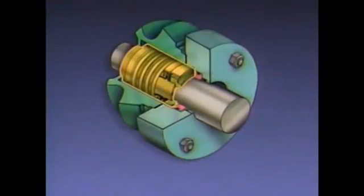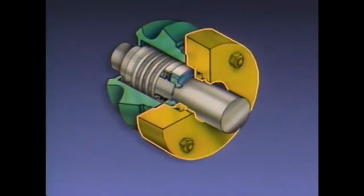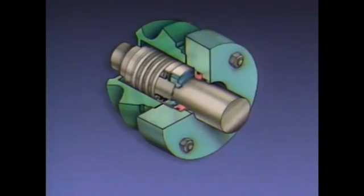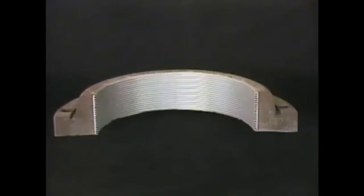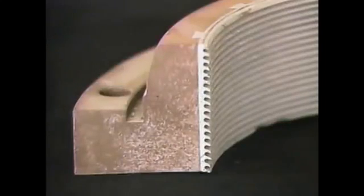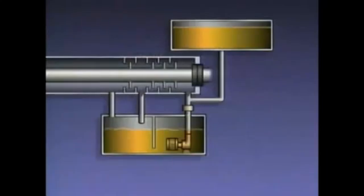The next components we'll look at are seals. Several types of seals can be used to prevent leakage inside a compressor and out of a compressor. A mechanical seal consists of a rotating element and a stationary element that can be used to form a seal between a rotating shaft and a stationary housing. A labyrinth seal consists of a series of ridges that create an intricate path that makes it difficult for leakage to get through the seal. Both mechanical seals and labyrinth seals may be used with a seal oil system.